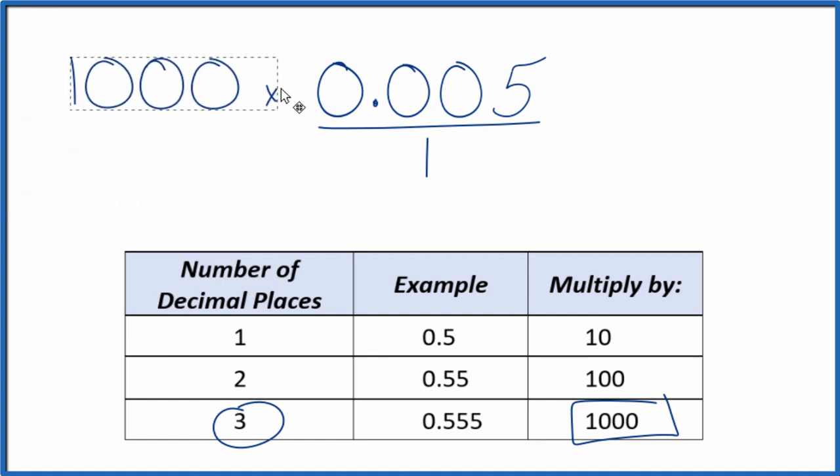So we take 1,000 and we multiply that by 0.005. That'll give us a whole number. So 1,000 times 0.005 is just 5. So we have our whole number.